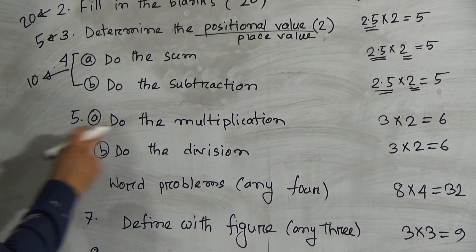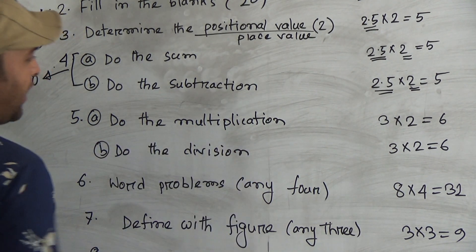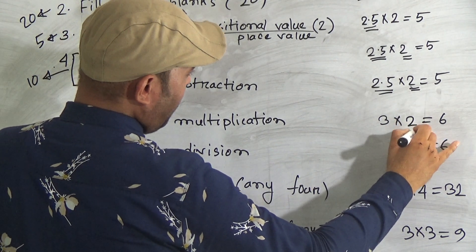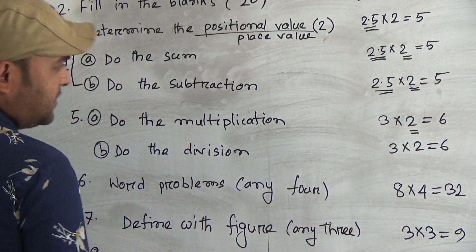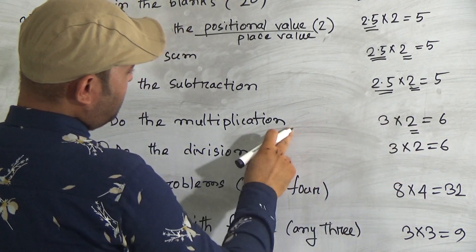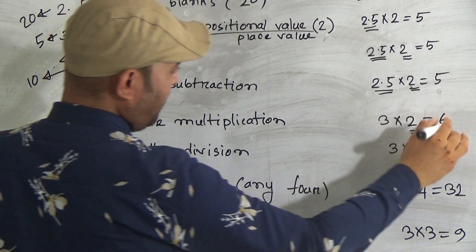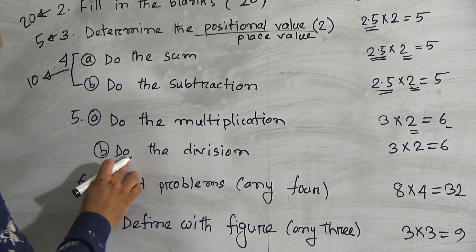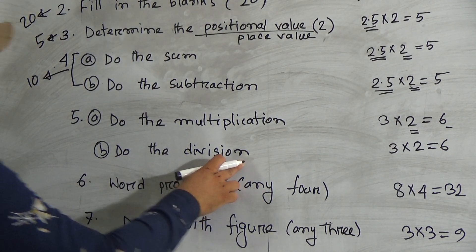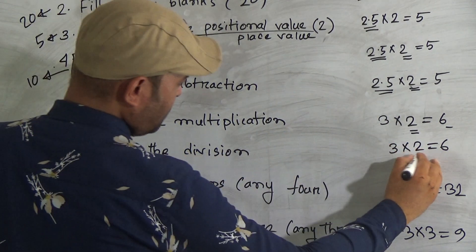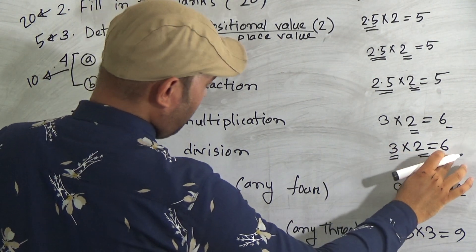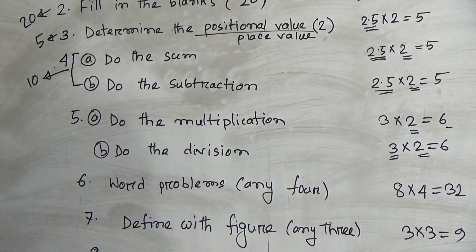Question number five: you have to multiply two numbers. Each multiplication contains three marks, so that is six marks. And number B, do the division — there are also two questions and each contains three marks, so that is also six marks. In question number five, there are twelve marks total.